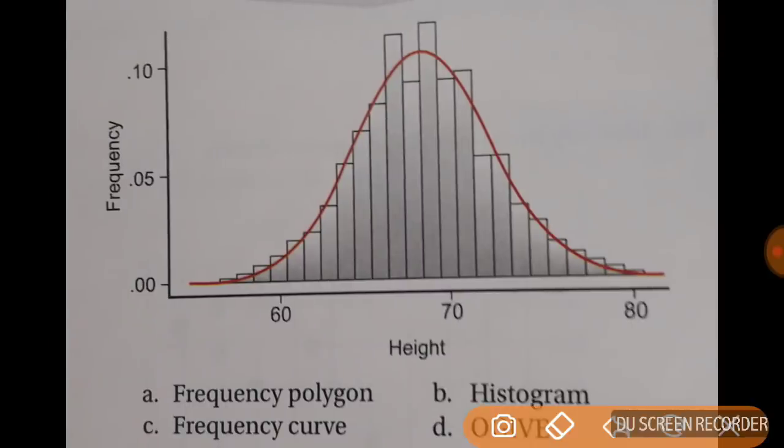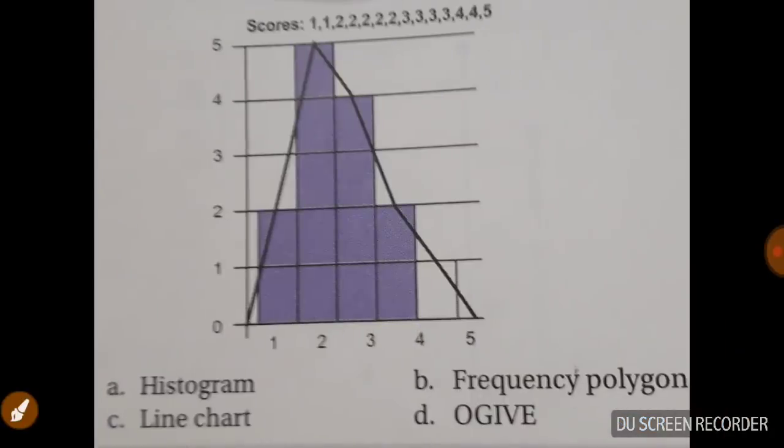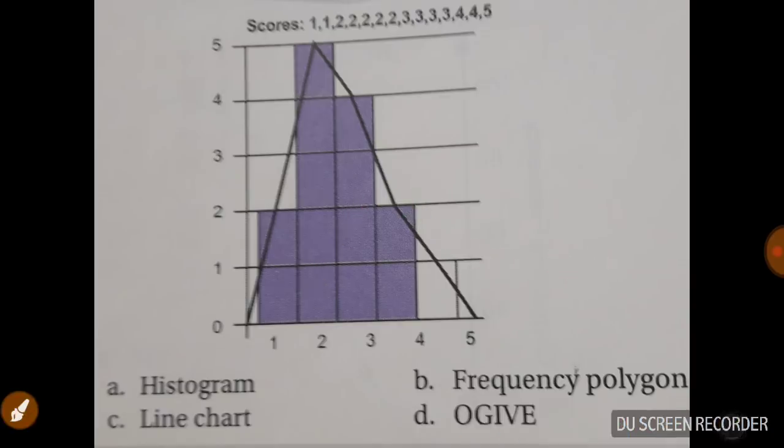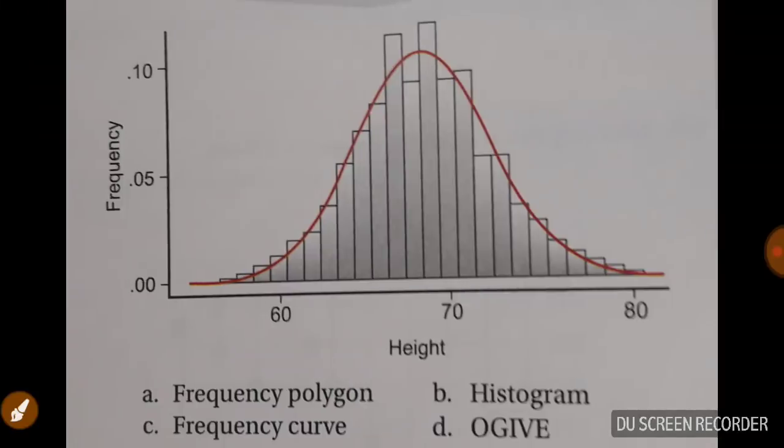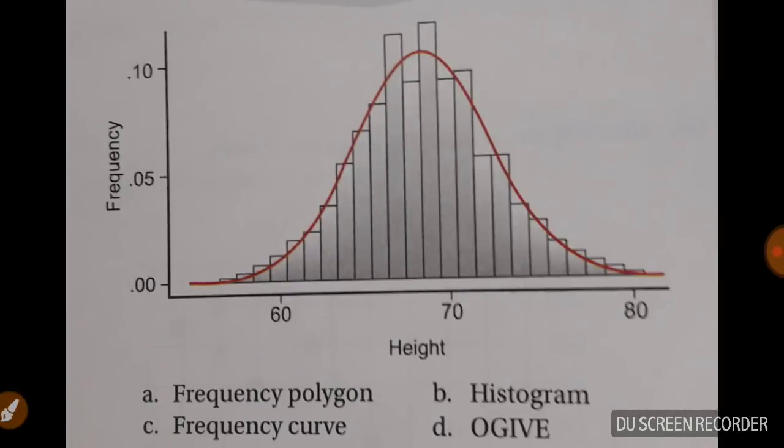Now tell me what is this. So this is just a frequency curve. Why curve? Because here you see one curve pattern is getting formed. What happens is when the number of observations is large and the group interval gets reduced, the previous frequency polygon loses its angulation and it becomes more curve-like and forms the frequency curve and not polygon. So this was frequency polygon, this is the frequency curve.